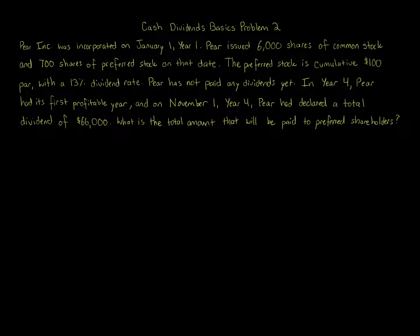Cash dividends basics, problem 2. Pair Inc. was incorporated on January 1st, year 1. Pair issued 6,000 shares of common stock and 700 shares of preferred stock on that date. The preferred stock is cumulative, $100 par, with a 13% dividend rate. Pair has not paid any dividends yet. In year four, pair had its first profitable year, and on November 1st, year four, pair declared a total dividend of $66,000.